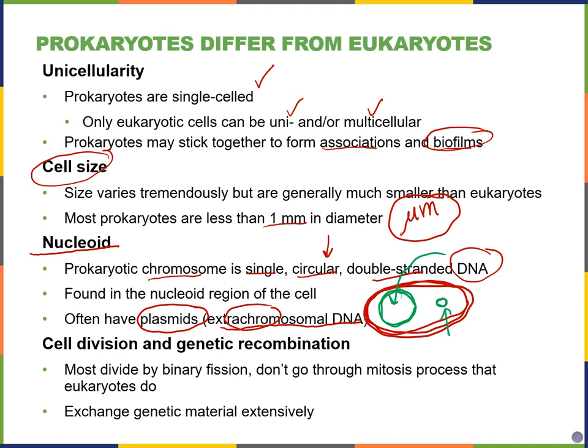Prokaryotes do not go through mitosis like eukaryotes do. Most of them divide by binary fission, where they make a copy of their DNA, the cell gets bigger, and they split into two identical cells. But they can also go through exchanges of genetic material, which we'll look at shortly.